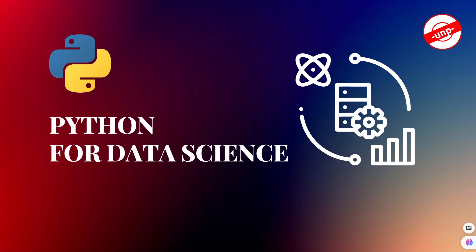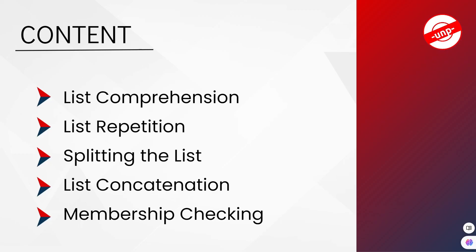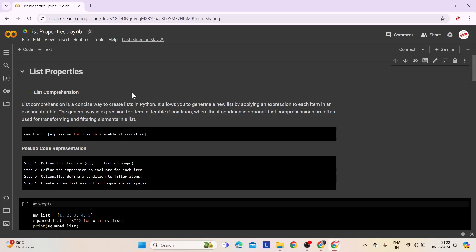Welcome to learning with UNP. In this session of Python for Data Science, we are going to understand about list properties. That includes list comprehension, list repetition, splitting the list, list concatenation, and finally membership checking. Let's begin with understanding the properties of list.